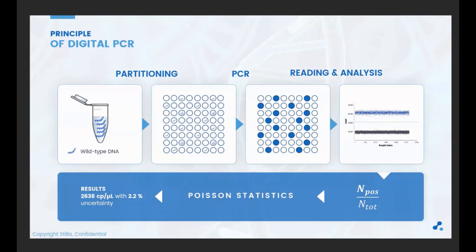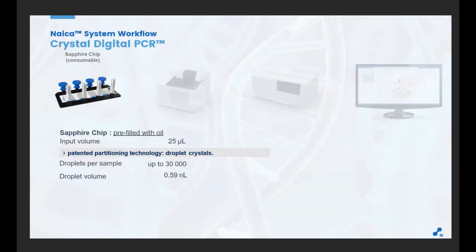I'll now briefly introduce the Crystal Digital PCR platform from Stila Technologies: the NAEKA system. The first element is the Sapphire chip, the only consumable needed in the NAEKA system workflow. The Sapphire chips contain four wells pre-filled with oil; you just need to add 25 microliters of your sample and mix into the white cap inlet. This is a patented partitioning technology called Droplet Crystal. Sapphire chips generate up to 30,000 droplets with a droplet volume of 0.59 nL.